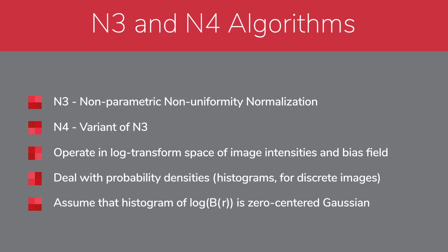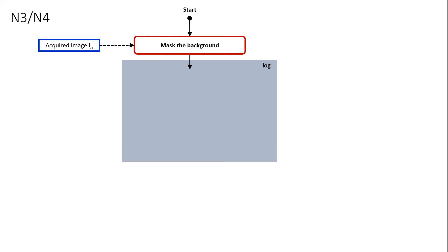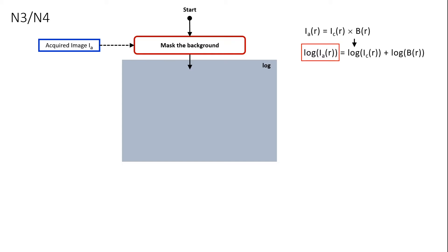Here we will review the internal steps of the N3 and N4 algorithms. First, the image background is masked. This step is followed by an iterative block performed in the log transform space of the image intensities and bias field. The logarithmic transformation conveniently changes multiplication to addition, but may run into problems in areas where signal intensity approaches zero, such as the air-filled background regions. Masking the background helps to minimize these potential issues. Within the iterative block, each iteration includes three steps. In step 1, the bias field histogram is estimated so that the corrected image is sharpened. This sharpening is achieved by applying the Wiener deconvolution filter to the image intensity histogram. The Wiener filter uses a Gaussian kernel with a full width at half-maximum selected by the user.